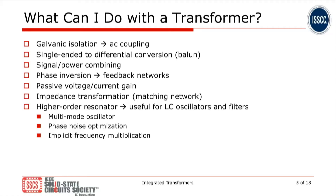So what can we do with a transformer? They provide galvanic isolation, so we can use them to perform AC coupling. We can use the transformer to achieve single-ended to differential conversion and signal and power combining. It is very easy to use the transformer to implement a phase inversion that might be useful in feedback networks, for example in the design of matching networks. If we combine a transformer with a pair of capacitors, we realize a higher-order resonator which is useful in the design of LC oscillators and filters.